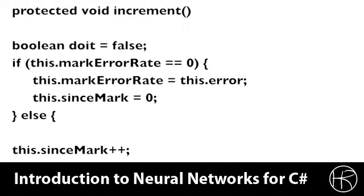First, we create a local variable called DOIT. If DOIT gets set to true, then that means that we have found a better neural network solution by increasing the hidden neuron count. Here we look at the mark error rate. The mark error rate is the last error rate that we encountered when we switched something. So if it's zero, that means that we have not yet sampled the error rate.